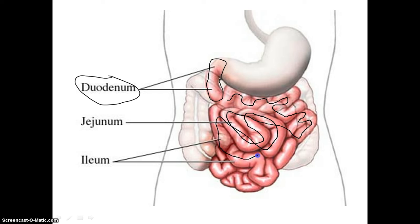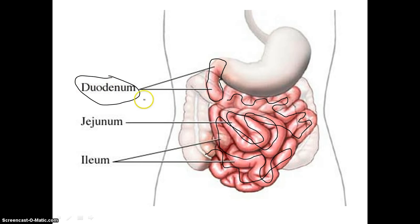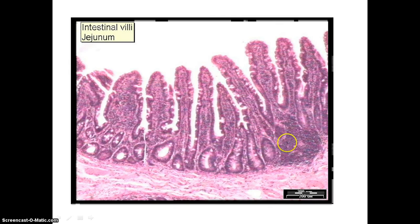Then it will pass on into the ileum where the ileum will absorb whatever is left, and it will end up passing into the first part of our large intestine called the cecum. So to review, the duodenum pretty much handles all of the digestion in our bodies, and the jejunum and the ileum do all of the absorbing in our bodies.